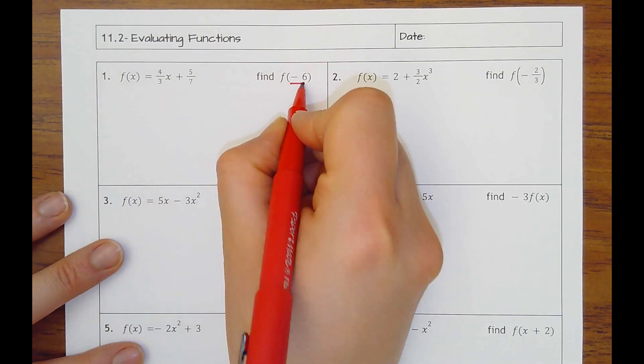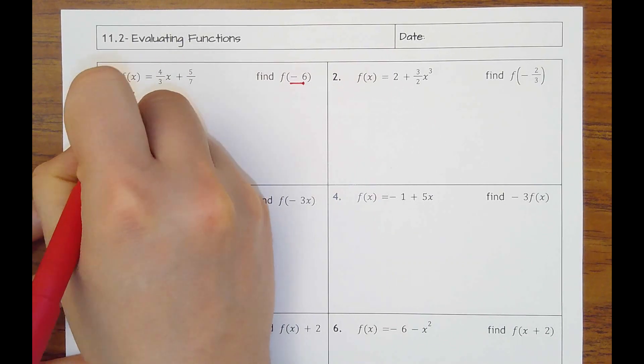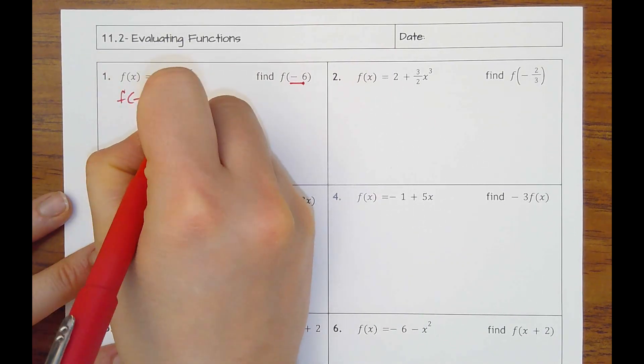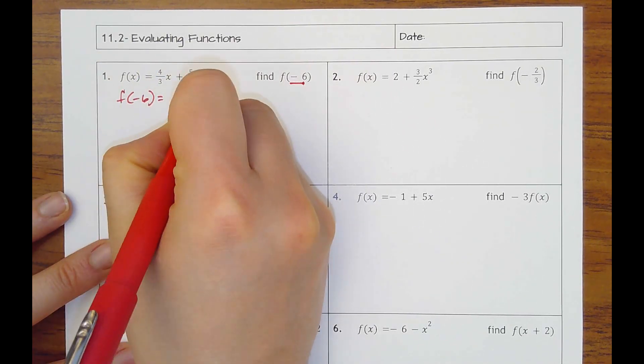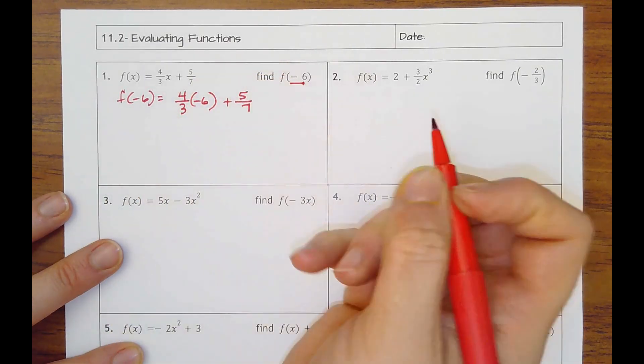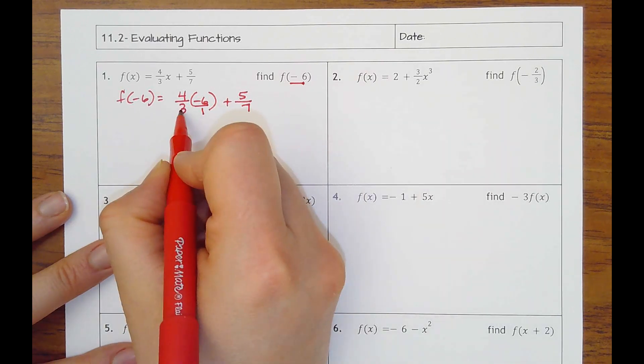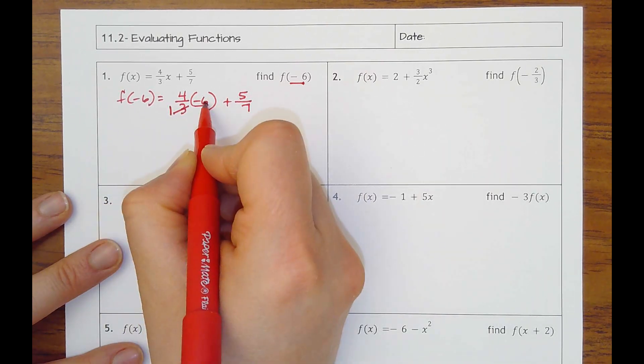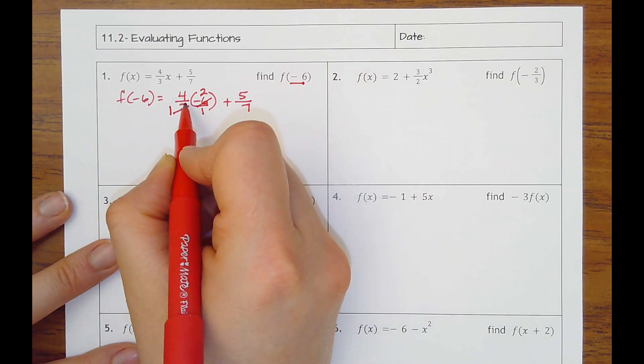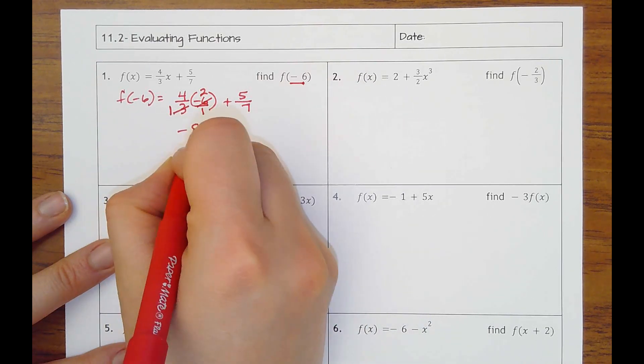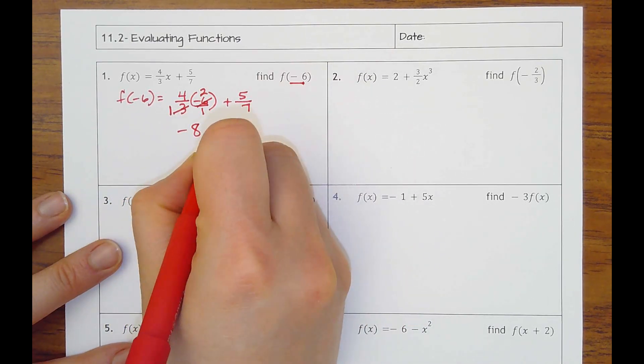They're wanting us to find f of negative six. So all that means is I'm going to replace x with negative six. You could do it on a calculator if you want. I'm going to put the six over one. I'm going to cross simplify by dividing out a three. So that would be negative two times four is negative eight over one is negative eight plus five sevenths.